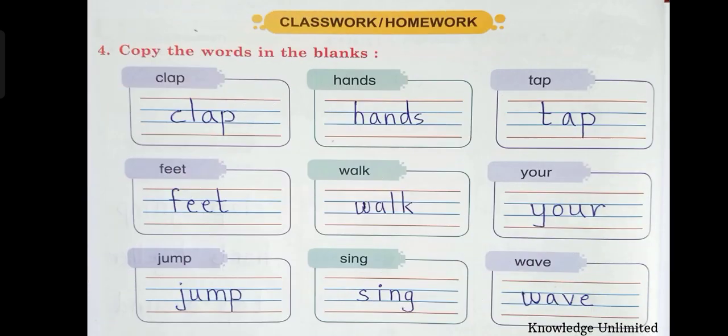Let's turn the page, children. We have question number four — copy the words in the blanks. We have some words over here and we just need to copy them neatly. The space is provided to you; we have to just write same to same. Whatever is written: clap, hands, tap, feet, walk, your, jump, sing, wave. So you need to write it neatly.